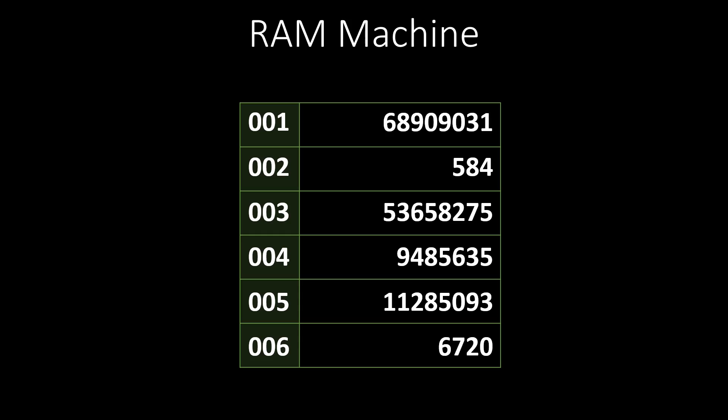RAM machines are equivalent to Turing machines, as they can be simulated on a Turing machine. Since Turing machines are more straightforward, we usually use them to say if a problem is computable. We define: a problem is computable if a Turing machine can compute it.